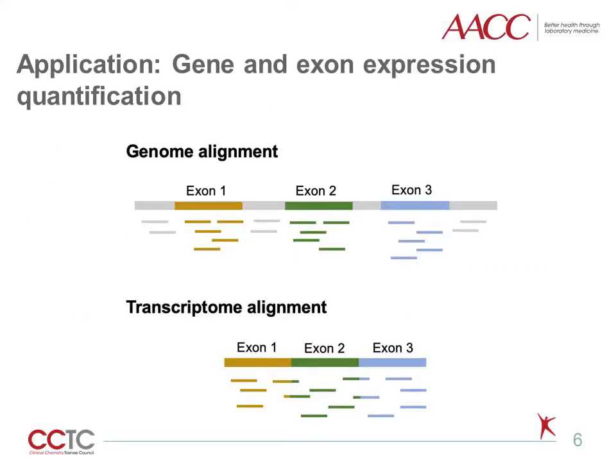There are two main RNA mapping strategies. Genome alignment involves aligning reads to an assembly of the entire genome and detects exonic and intronic reads. Exome alignment involves aligning reads to the exome only. With exome alignment, we can identify exon junction reads, but with genome alignment, these reads are lost because they do not map to the genome assembly.